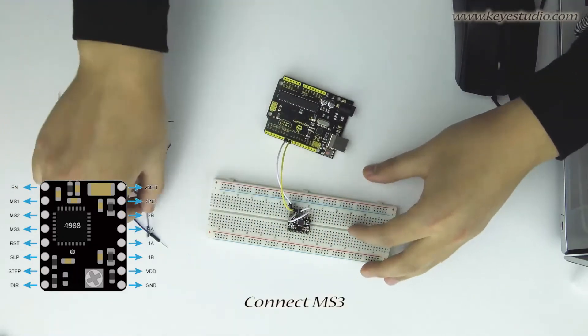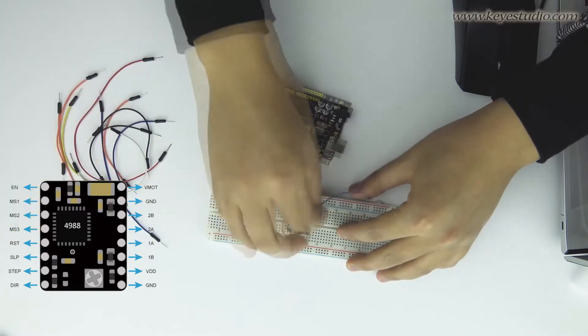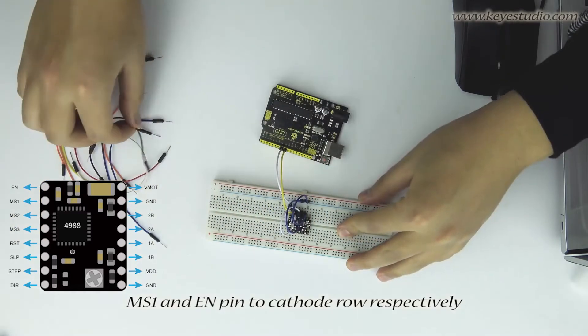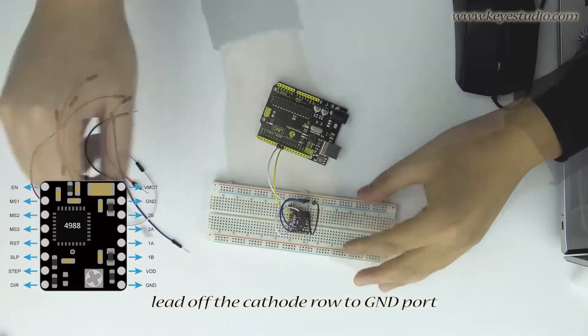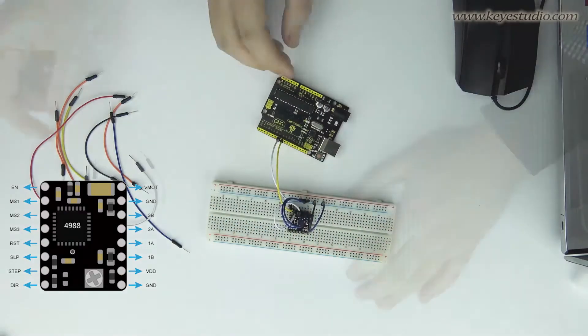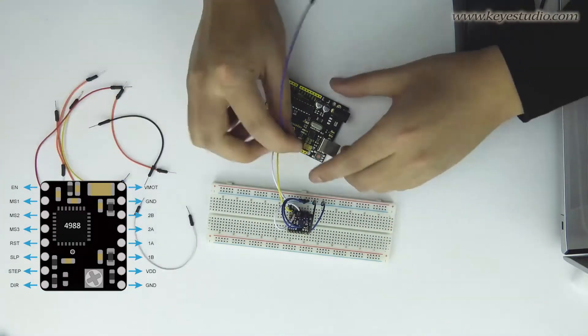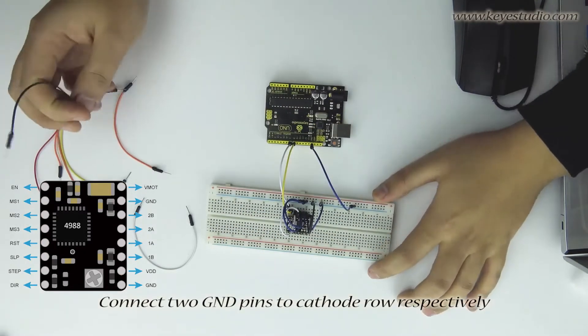Connect MS3, MS2, MS1 and enable pin to cathode row with jumpers. Click off the cathode row to ground row. Connect two ground pins to cathode row with jumpers.